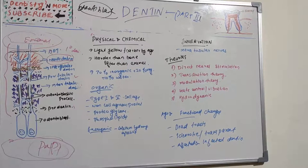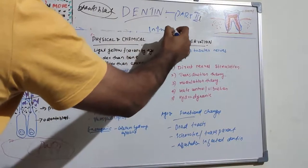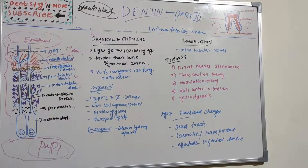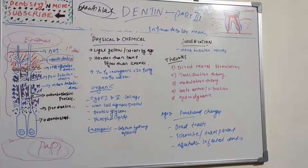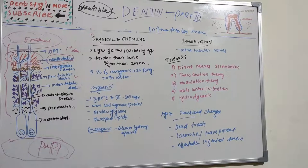These intratubular nerves and their terminals are found in close association with the odontoblastic process within the tubule. There are various theories of pain transmission through dentine: direct neural stimulation, transduction theory, modulation theory, gate control or vibration theory, and hydrodynamic theory.